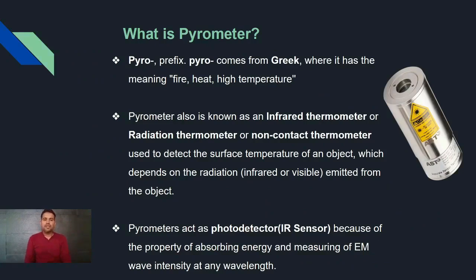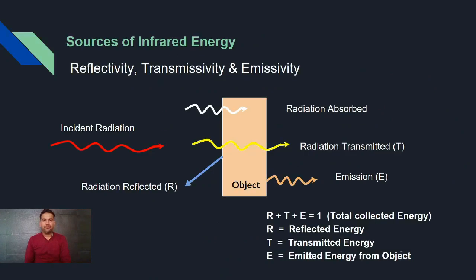What is the pyrometer? Pyrometer is the instrument which is used to detect the surface temperature of the object, which depends upon the radiation emitted from the objects. Pyrometer acts as a photodetector because of the property of absorbing the energy and measuring the electromagnetic wave intensity at different wavelengths.